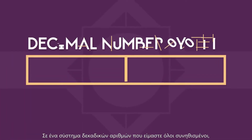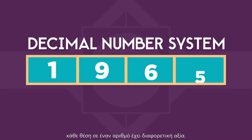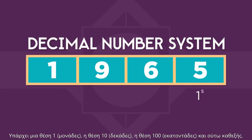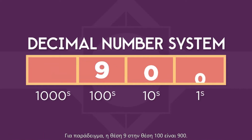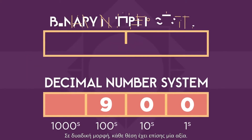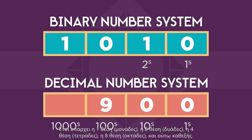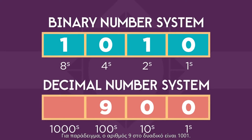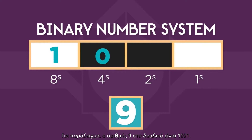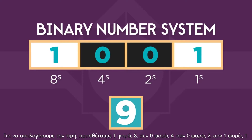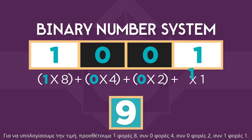Here's how this works. In the decimal number system we're all used to, each position in a number has a different value — there's the ones position, the tens position, the hundreds position, and so on. For example, a nine in the hundreds position is nine hundred. In binary, each position also carries a value, but instead of multiplying by ten each time, we multiply by two. So there's the ones position, the twos position, the fours position, the eights position, and so on. For example, the number nine in binary is 1, 0, 0, 1.